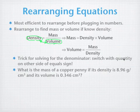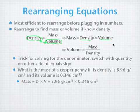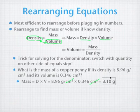So a couple of quick calculations. What is the mass of a copper penny? If its density is 8.96 grams per cubic centimeter, and its volume is 0.346 cubic centimeters, we're going to use the first equation here, density times volume. So the mass is equal to density times volume. The cubic centimeters cancel out because one is on, in the numerator, one's in the denominator, and leaves us with grams, 3.10 grams is our answer.